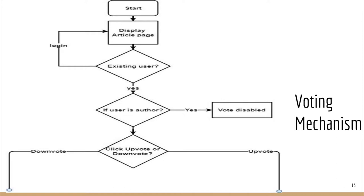First, an article is shown to the user. When they try to upvote or downvote that article, the system checks whether they are an authenticated user. If authenticated, they have permission to vote; if not, they have to log in first. If authenticated, the system then checks whether the user is the author or not. If the user is the author, they cannot upvote their own article, so the vote flag is disabled for them.